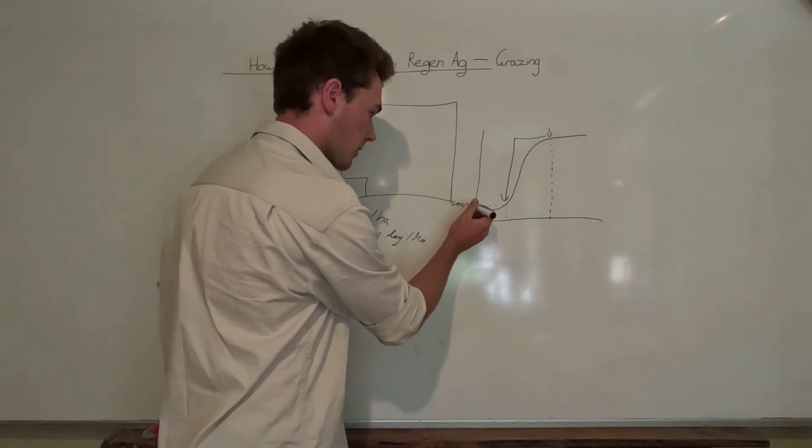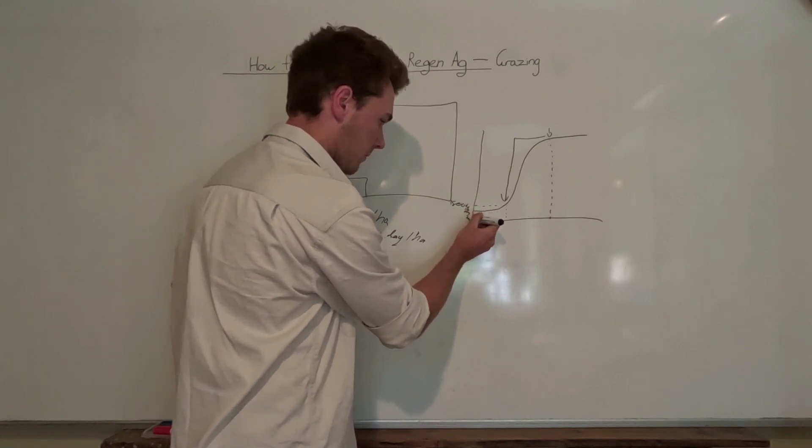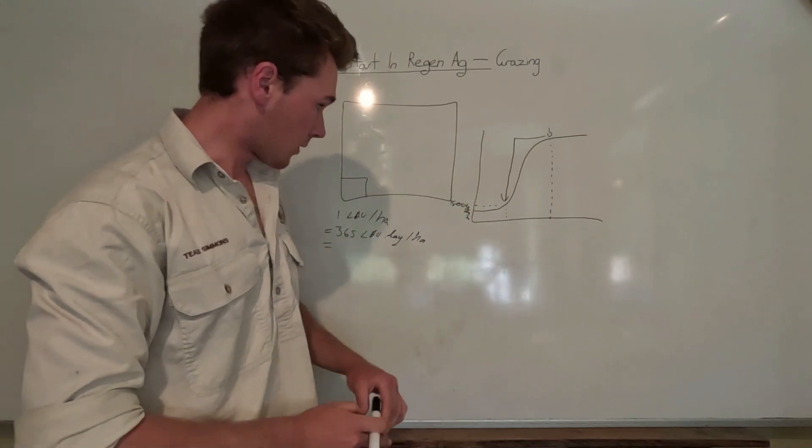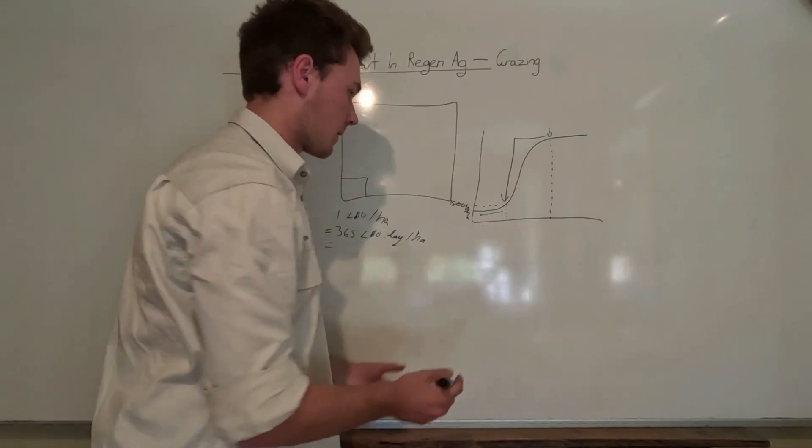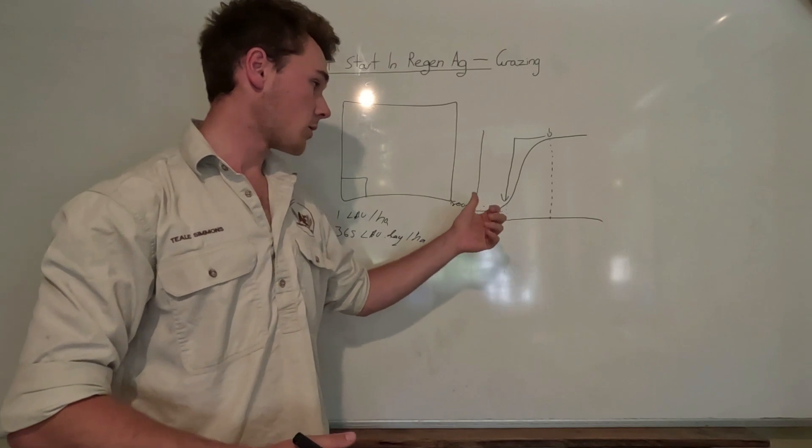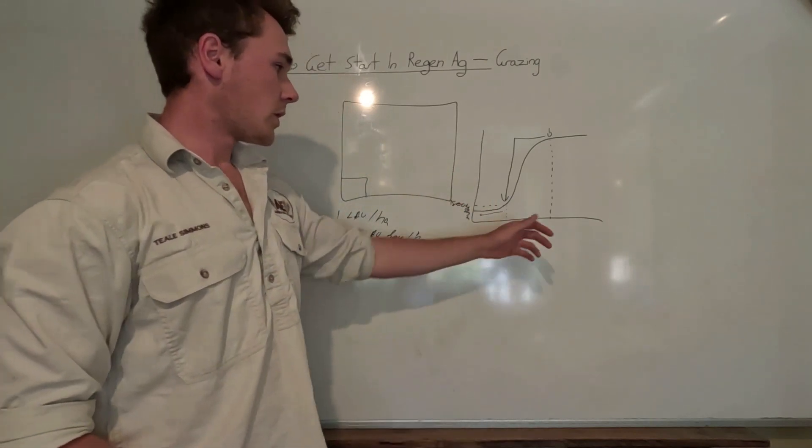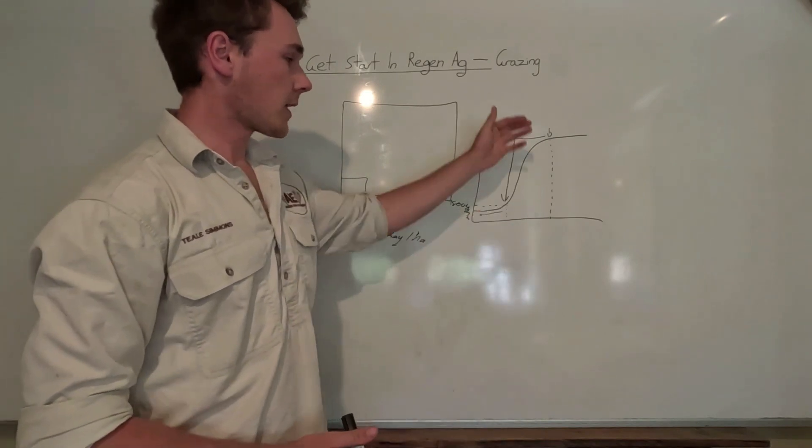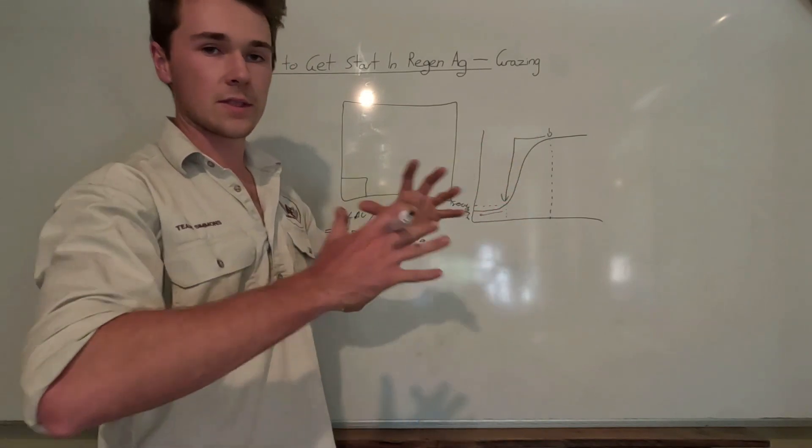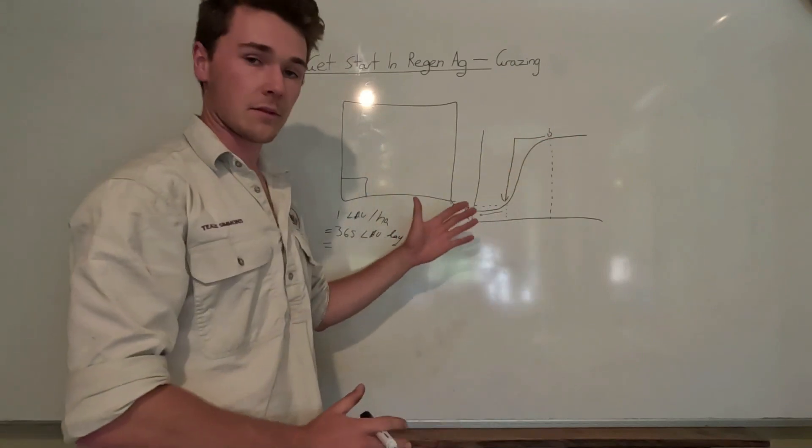So I want you to make sure that the pasture doesn't go below 1500 kilos of dry matter per hectare. Otherwise if you do that you're going to be pushing your plants back into this stage where they're relying on energy stores in the roots. We just want to get them to the point where they're relying on photosynthesis so that they can start collecting energy from the Sun using that energy and then growing from that. We don't want to push them into reserves from their roots. That is very important.